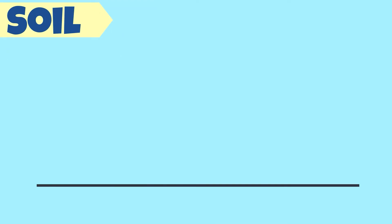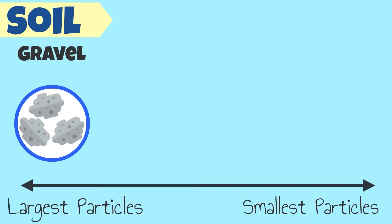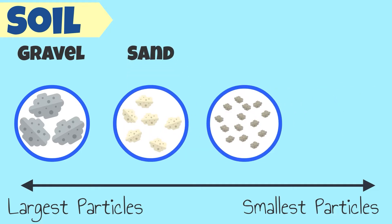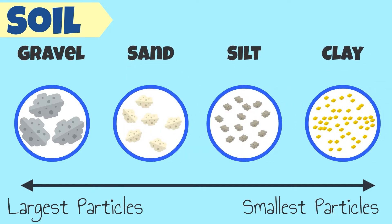We also classify soil according to the size of its particles. Gravel contains the largest particles, followed by sand, then silt, and lastly clay.